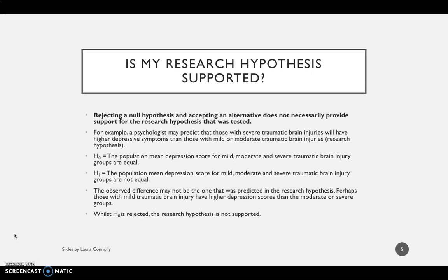So now that we've gone through H0 and H1 — your null and alternative hypothesis — we need to consider if your research hypothesis is supported. As I mentioned before, rejecting the null hypothesis and accepting the alternative doesn't necessarily provide support for your research hypothesis. So for example, a psychologist may predict that those with a severe traumatic brain injury will have higher depressive symptoms than those with mild or moderate traumatic brain injuries — which is your research hypothesis here.